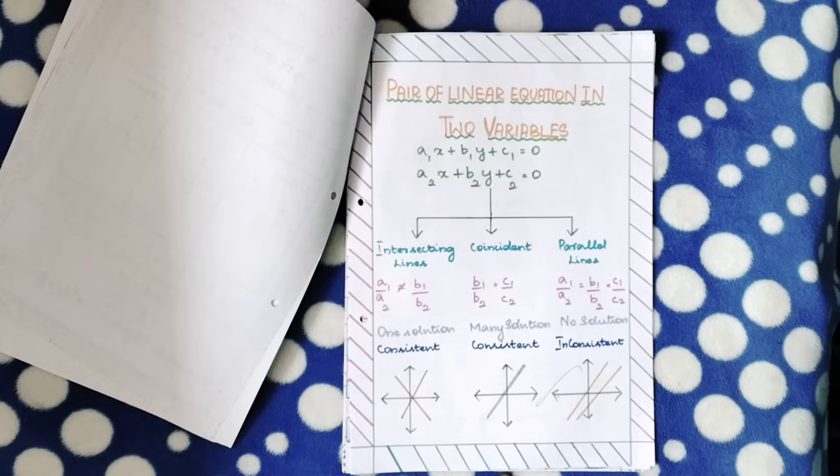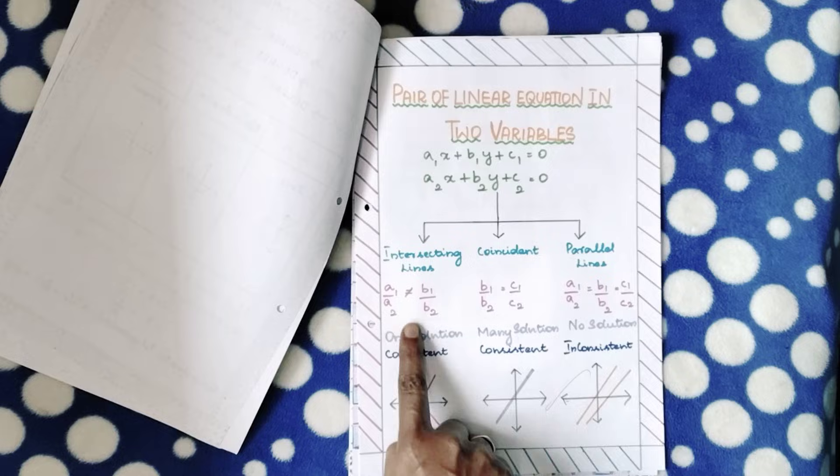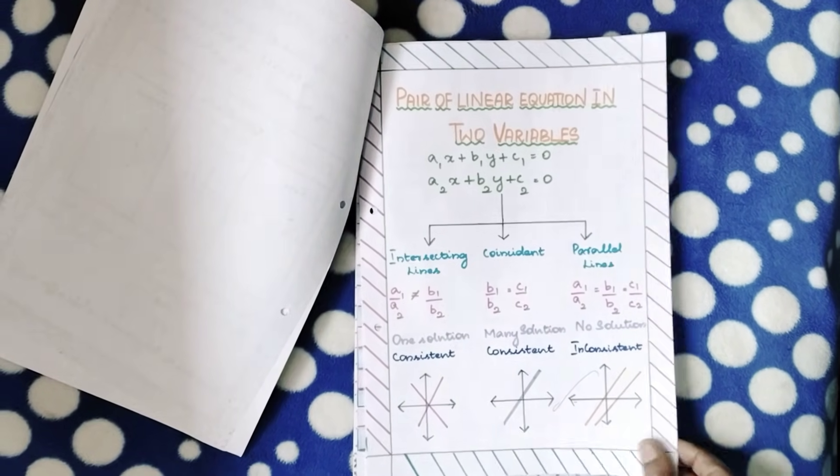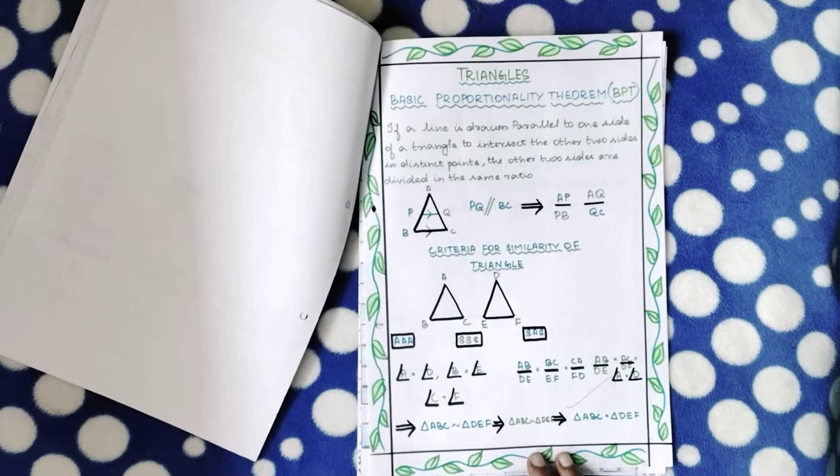The next page is the pair of linear equations in two variables where she's just given what is intersecting, coincident, parallel lines, the conditions, and if it is so, how will the graph be if you constructed it. Then triangles - the basic proportionality theorem BPT.